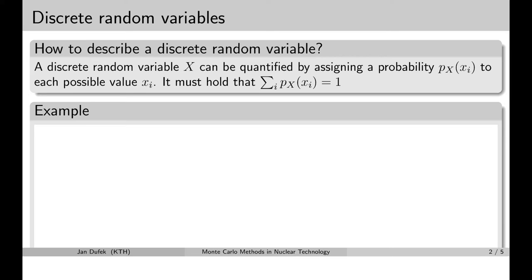And the probability density functions can provide such a description to continuous random variables. A description of discrete random variables is much easier. We simply assign a probability to each possible value.